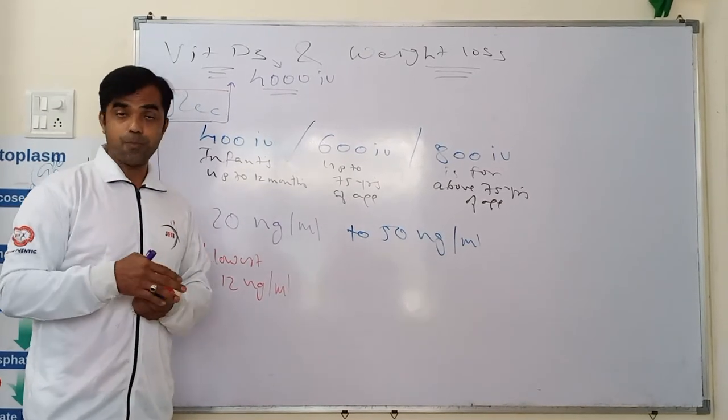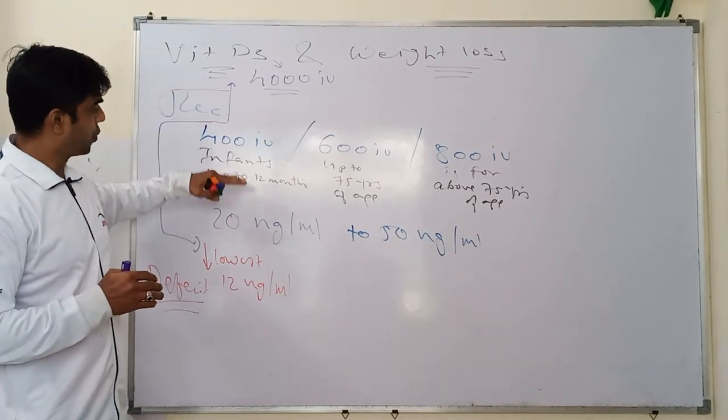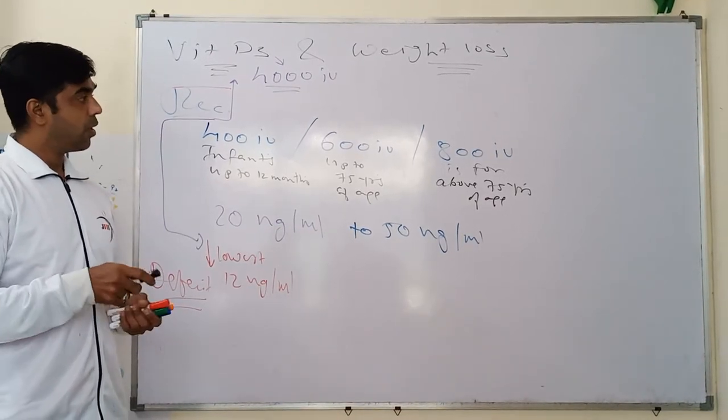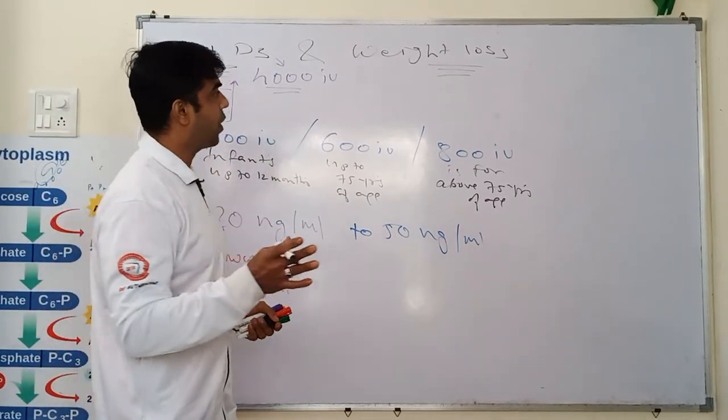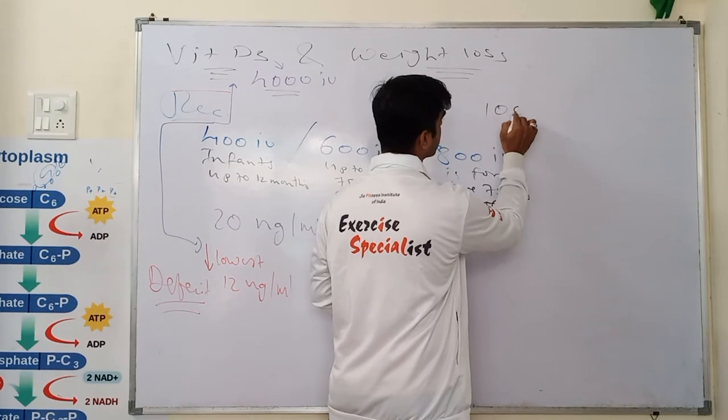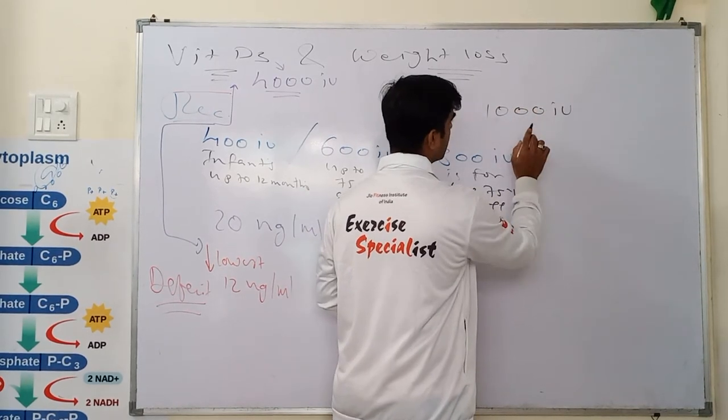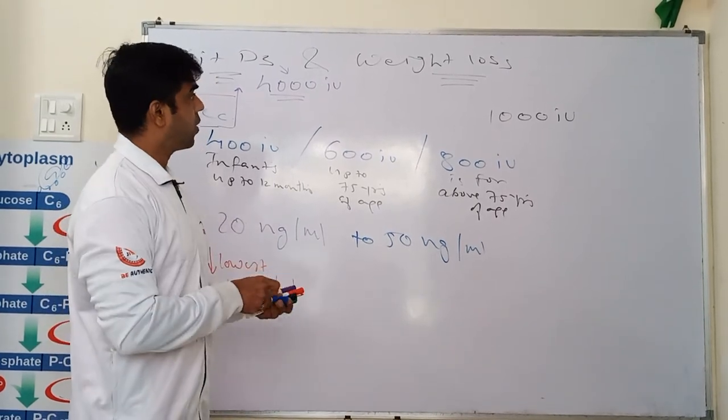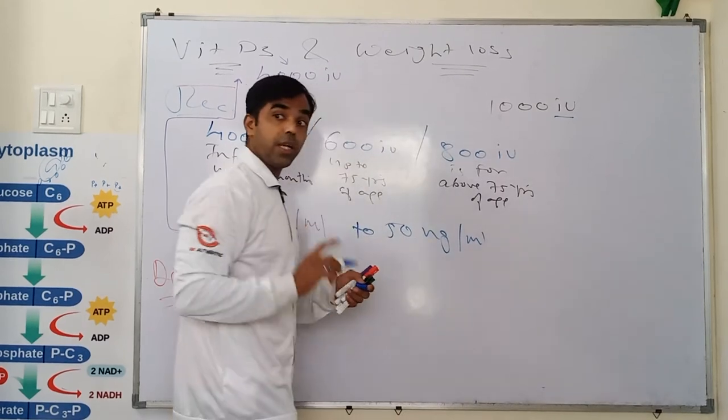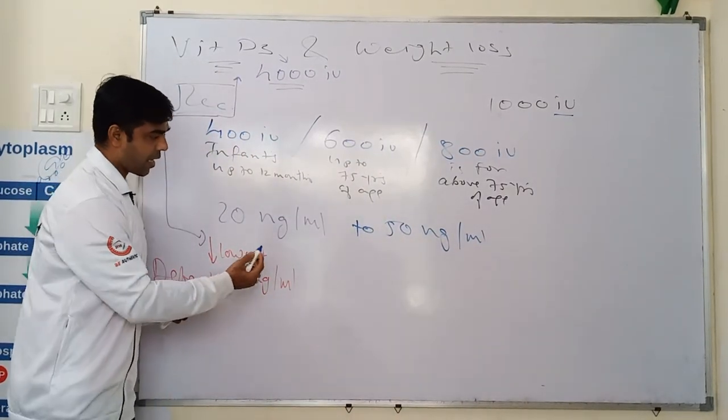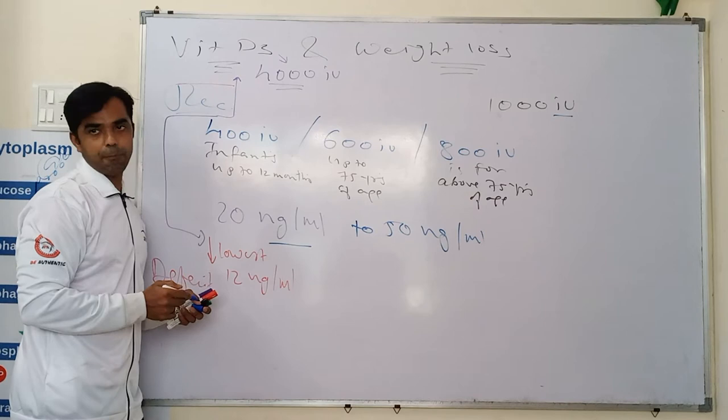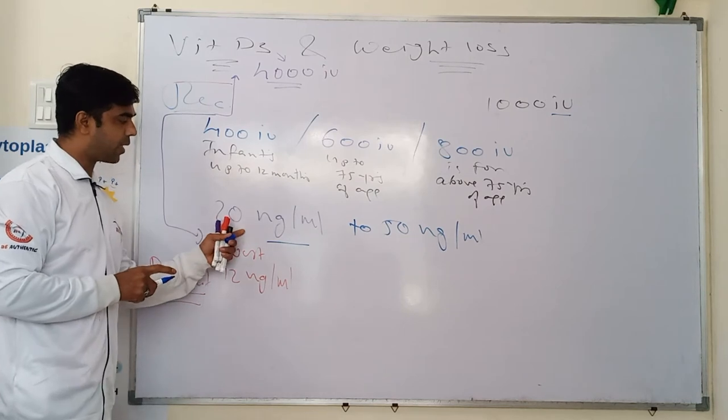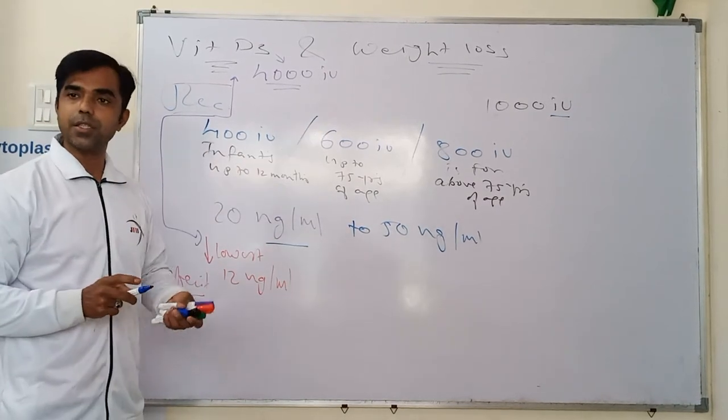If you want to buy supplement to maintain the level from this range to this end, the medical stores will provide you supplement from 1000 IU to 2000 IU and above. This supplement is present in international unit and the report will tell you nanogram per ml, so you need to convert nanogram into the international units.